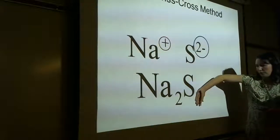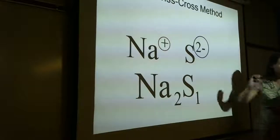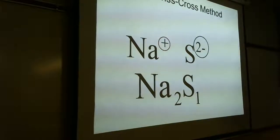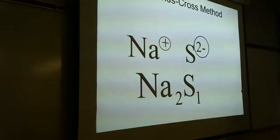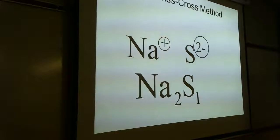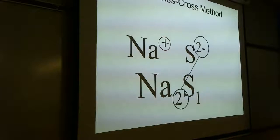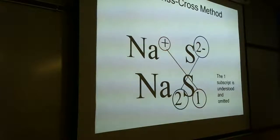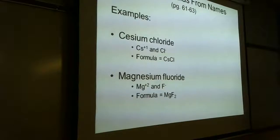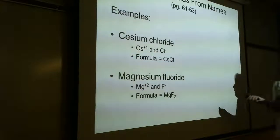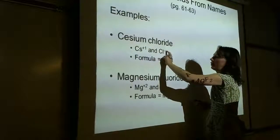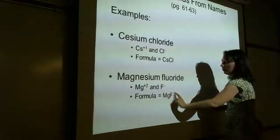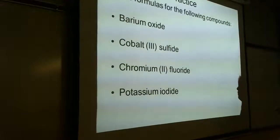When the subscript would be one, we just drop it — we assume it's one if there's no subscript shown. I won't take off points for writing a one, but it's not necessary. Barium oxide is BaO, cobalt(III) sulfide is Co₂S₃, chromium(II) fluoride is CrF₂, and potassium iodide is KI.